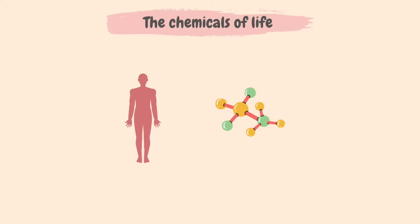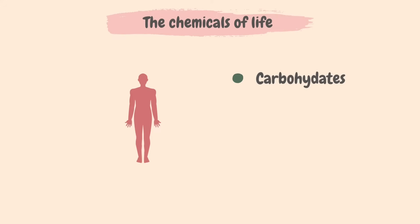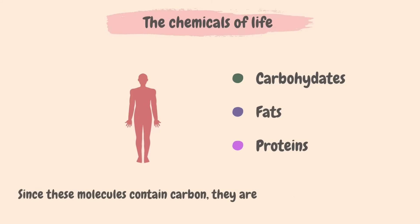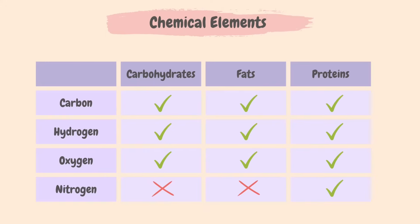The three main categories of molecules in living organisms are carbohydrates, fats, and proteins. Since these molecules contain carbon, they are known as organic molecules. Carbohydrates, fats, and proteins all contain carbon, hydrogen, and oxygen, but only protein has nitrogen additionally, and proteins even contain small amounts of sulfur.